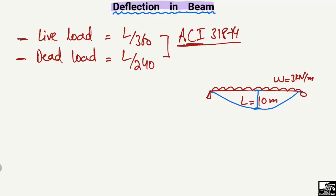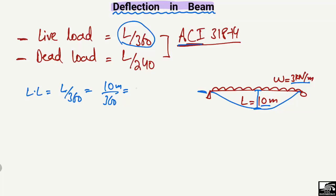ACI says that deflection due to live load should always be less than L/360. For this beam, the live load limit is L/360, where the length is 10 meters. So 10 divided by 360 gives 0.0277 meters, which multiplied by 1000 gives 27 millimeters.